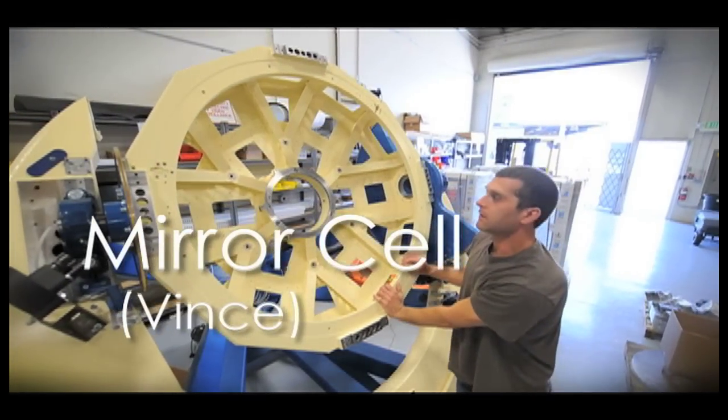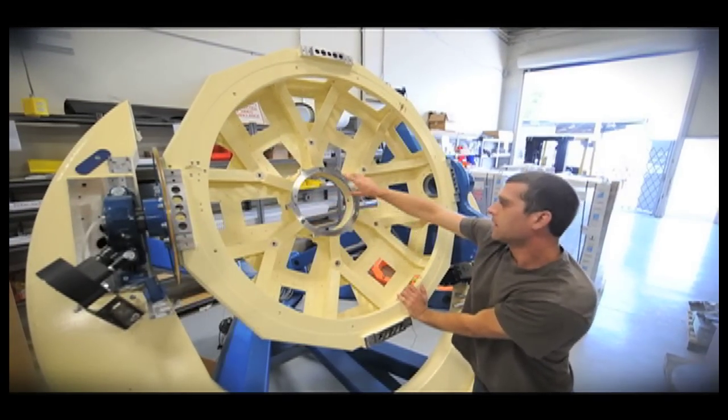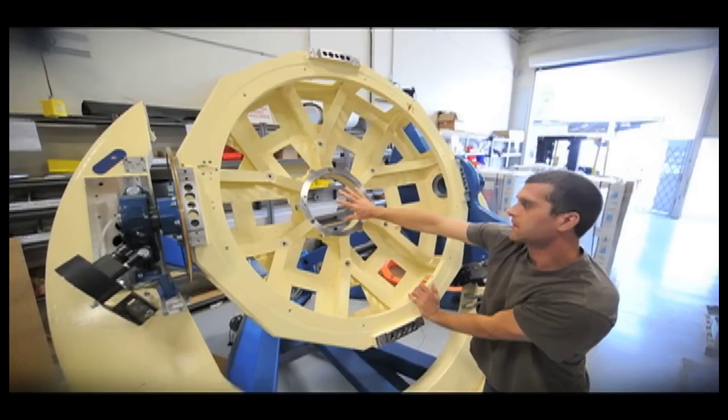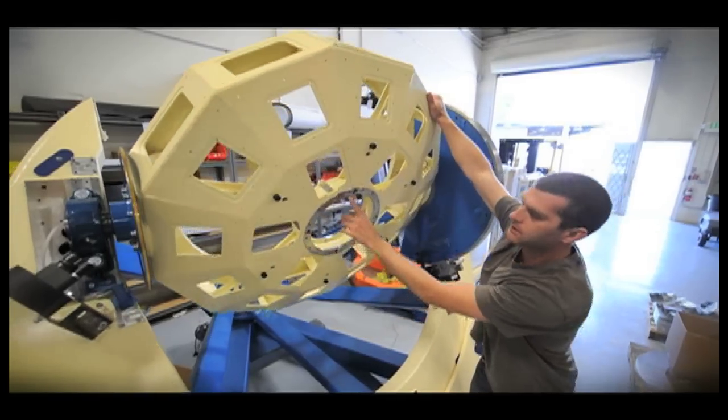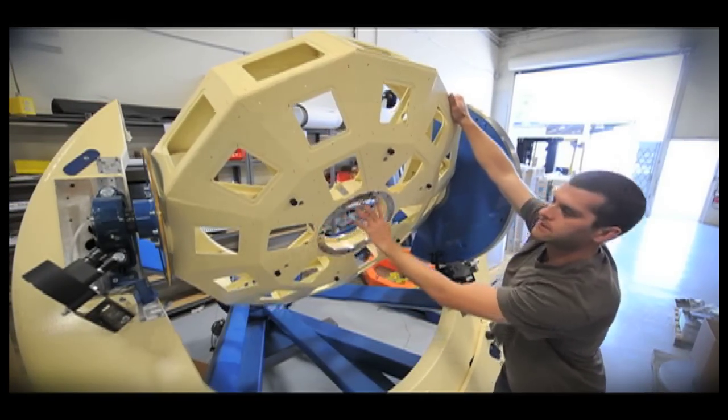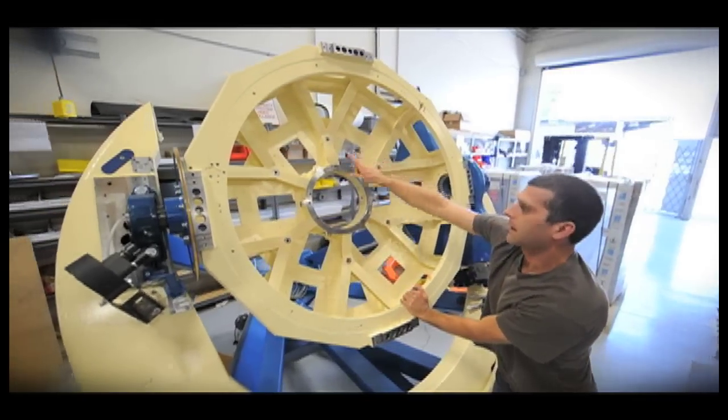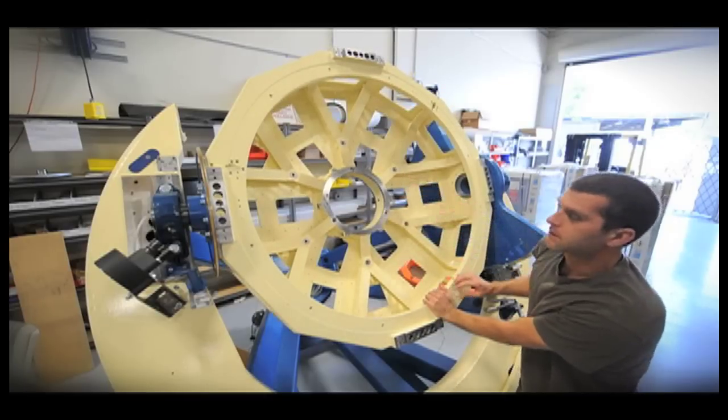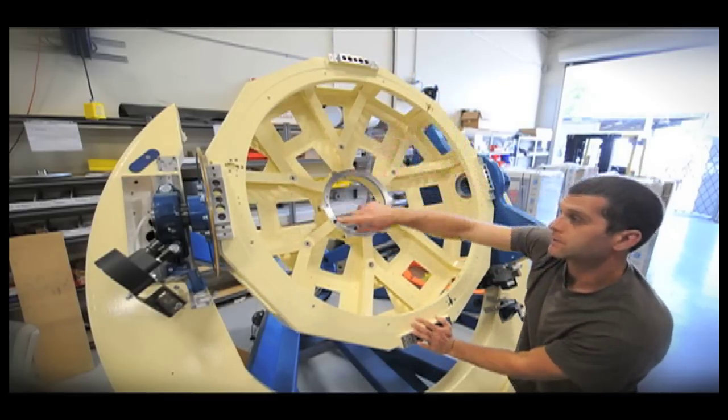This is the primary mirror support. This is the central hub where the primary mirror sits—it bolts to that. The instrument bolts to this back surface here, so that's where all the instrumentation goes. And then these six pads are where the Wiffletree support bolts on, and these four pads are where the truss mounts.